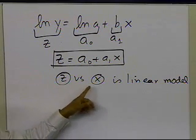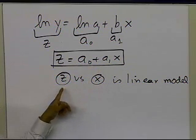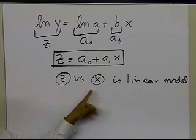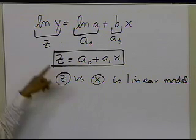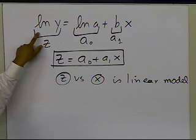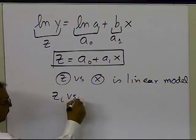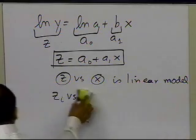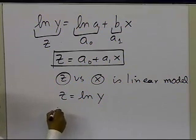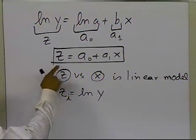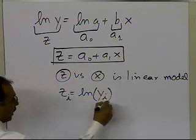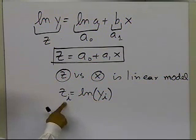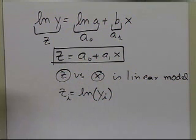You can use these relationships for a0 and a1 by transforming your data from y versus x to z versus x. How do you do that? Simply by taking the log of the y values: zi = log(yi). Once you have converted your y versus x data to z versus x data, you can use the linear regression formulas for a0 and a1.